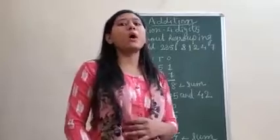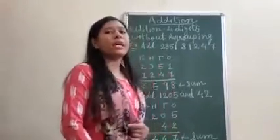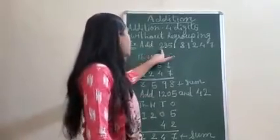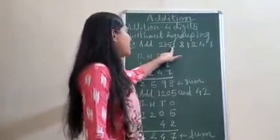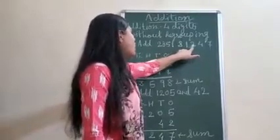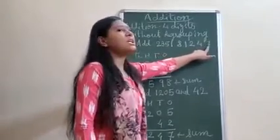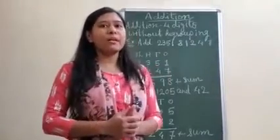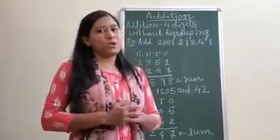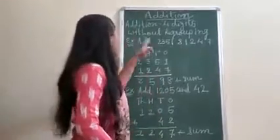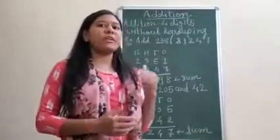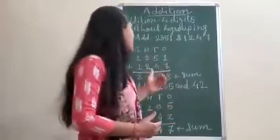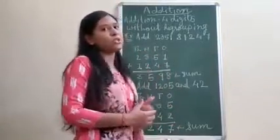Without regrouping means without carrying. Just look over here. I have written a few examples. Look at the first one: add 2351 and 1247. Now keep in mind, whenever we add any number, we will write it according to placement. So whatever number is at the ones place, we will write it at the ones place. Same way we will write at tens, hundreds, and thousands.